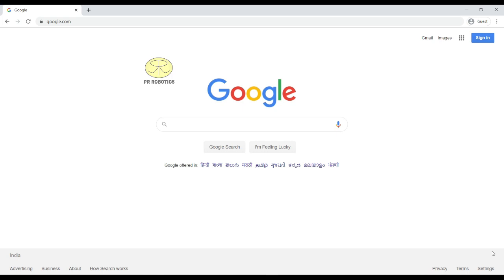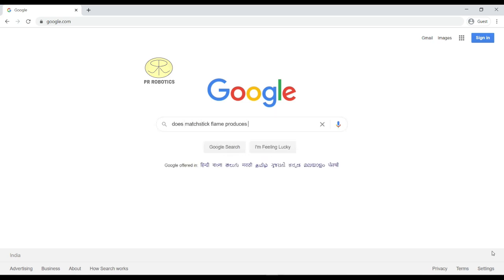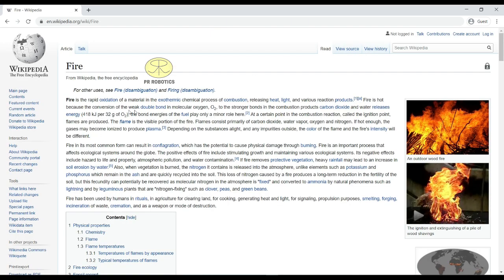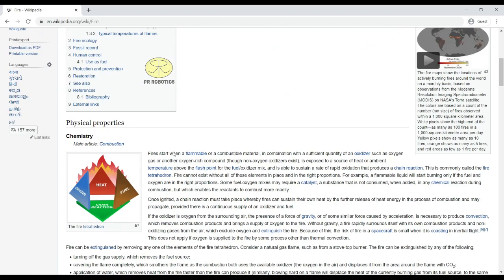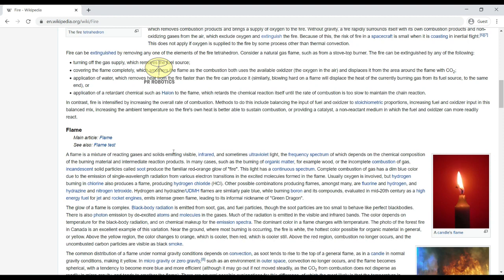So now let's see which light is produced by the flame. After opening the Wikipedia page and studying it a bit, here we get our desired result that flame produces infrared light.